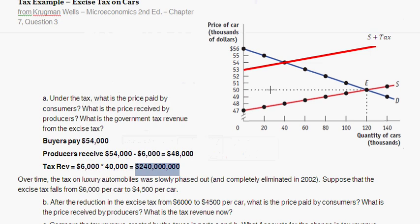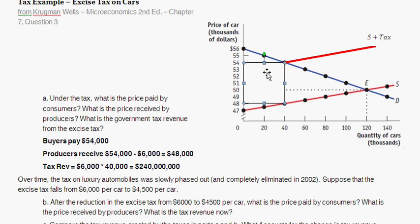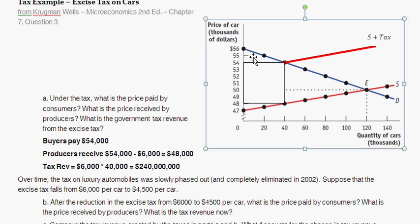Another way to visualize this: the tax revenue is the rectangle in the graph. The triangle above is the new consumer surplus, the triangle below is the producer surplus, and the remaining area represents the deadweight loss from this particular tax. Moving on to Question B.